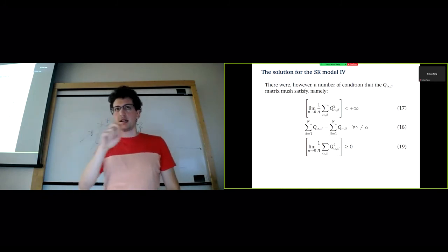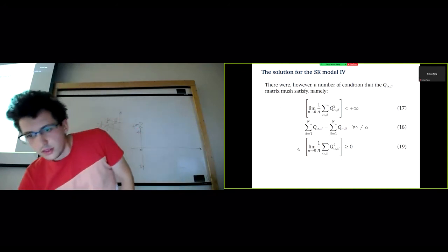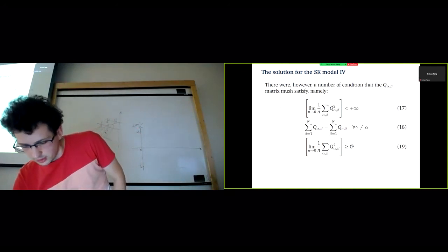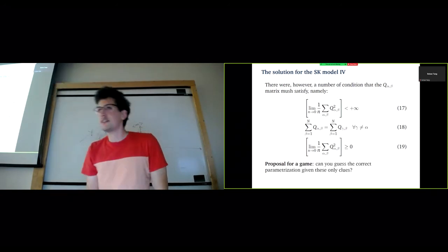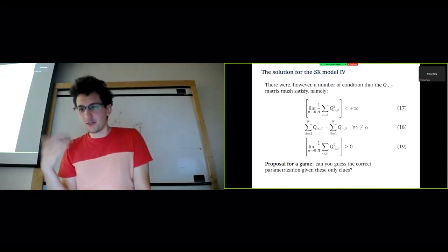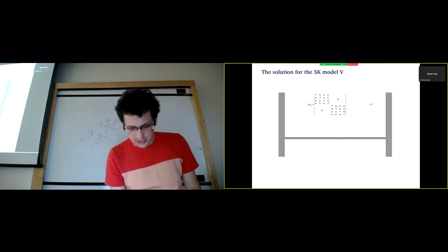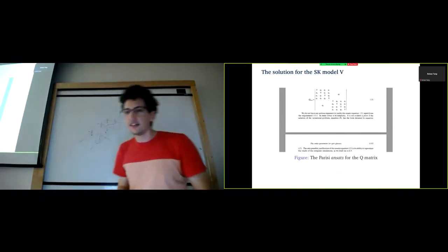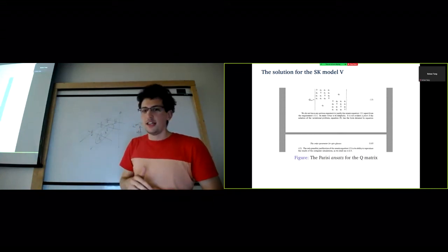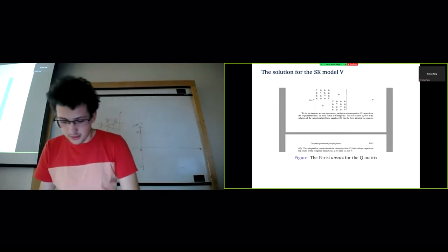There are some constraints on that function which can be inferred from the mean field theory of the Sherrington-Kirkpatrick model. For example, the first one comes from the fact that the internal energy of the system must be finite. This one here comes from a particular symmetry of the system. And this one here is again due to the energy being positive. My question is, with these clues, can you guess the correct parameterization of the matrix? This is of course a rhetorical question because the correct parameterization of the matrix is this one, which has a parameterization that is like three lines long. And this is actually from the original paper. The funny thing is that Parisi admitted straight away that he had no proof that that was the correct parameterization. He just said it's very simple and it works with the simulation, so let's just go with it.